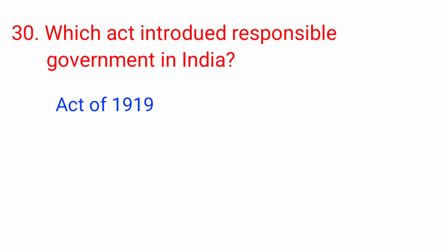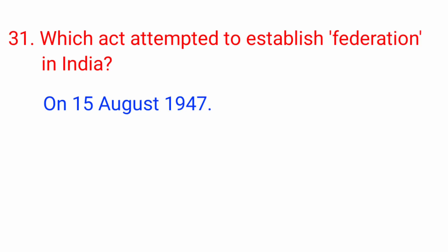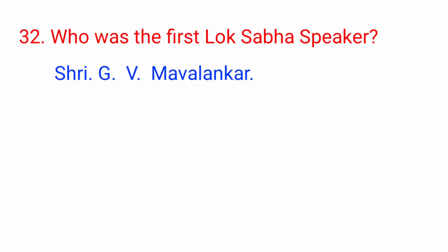Question number 30: Which act introduced responsible government in India? Answer: the Act of 1919. Question number 31: Which act attempted to establish federation in India? Answer: Government of India Act 1935. Question number 32: Who was the first Lok Sabha speaker? Answer: Shri G.V. Mavalankar.